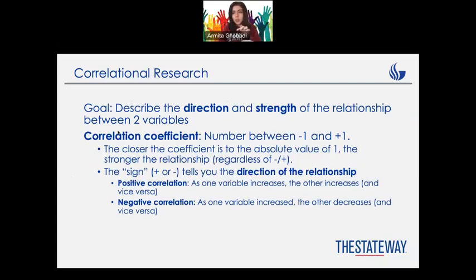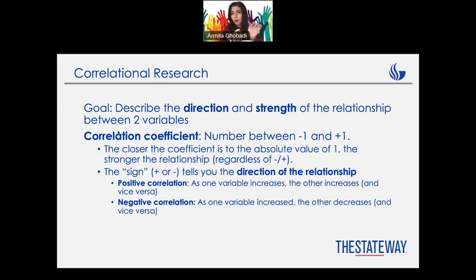Another type of descriptive research is correlational research. It is very important and very common, especially in psychology. The goal is to give you the direction and strength of the relationship between two variables. That number is always going to be between minus one and positive one — it will never exceed one.